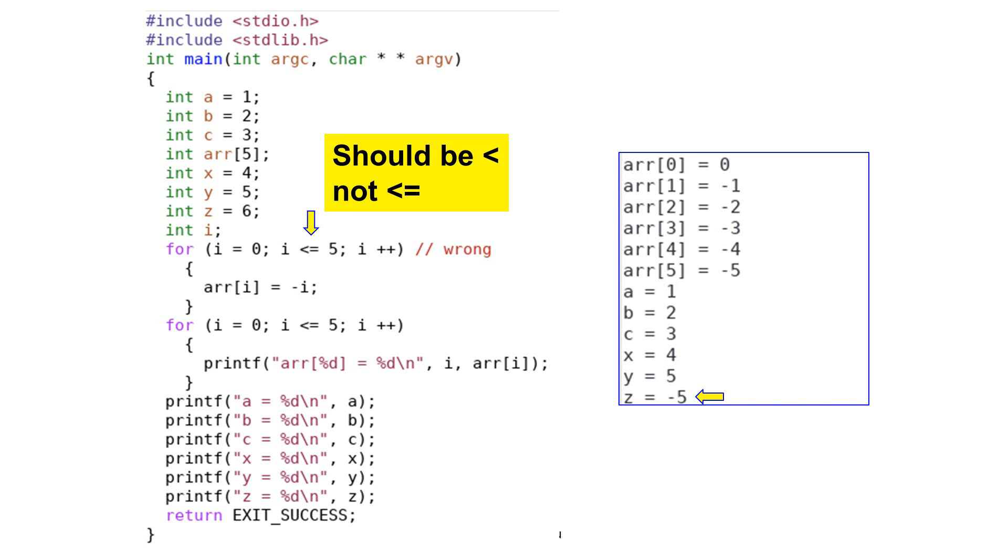This program has an array of 5 elements. The elements are 0, minus 1, minus 2, minus 3, and minus 4. This program has a problem because the index actually goes to 5. Thus, this program is wrong.